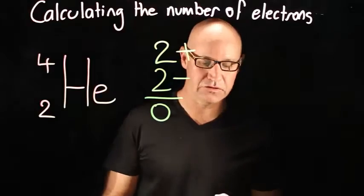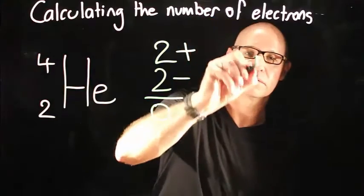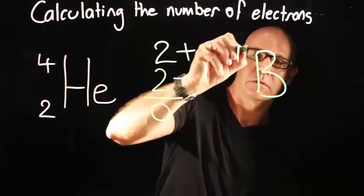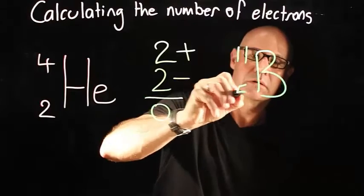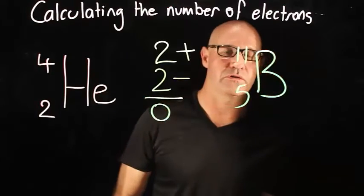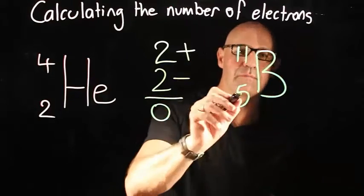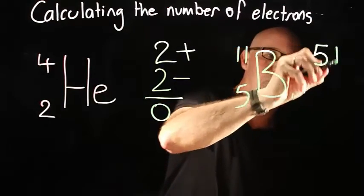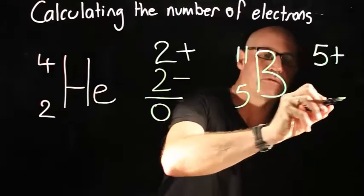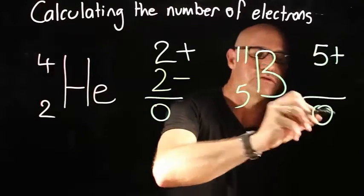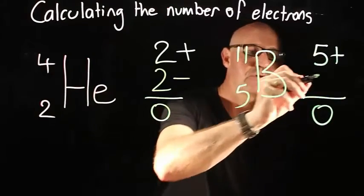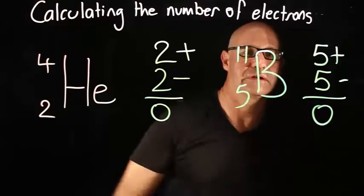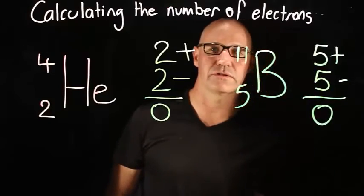Let's just do one more. Here's boron. Boron has got five protons and an overall zero charge, so therefore it must also have five electrons.